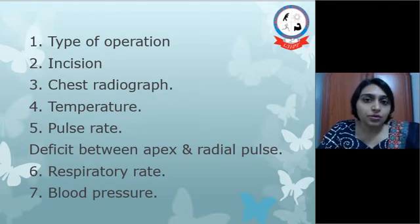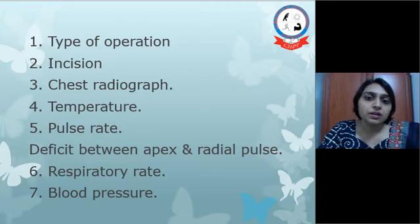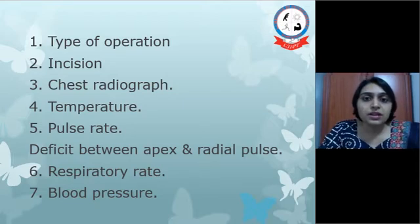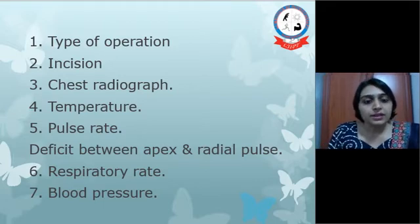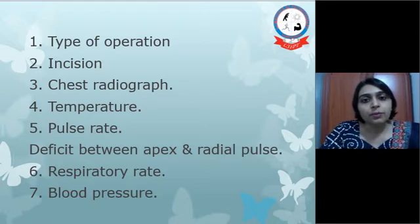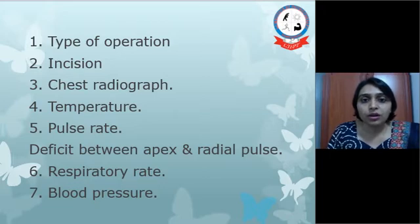We also need to find out the deficit between apex and radial pulse. In cases like pneumonectomy and lobectomy, if the mediastinum gets shifted to any side, we may get a pulse deficit, which may indicate some issues with the patient. If we find a deficit between apex and radial pulse, we might suspect atrial fibrillation occurring in the patient, so we have to refer that patient to another medical officer. Next is respiratory rate and blood pressure.